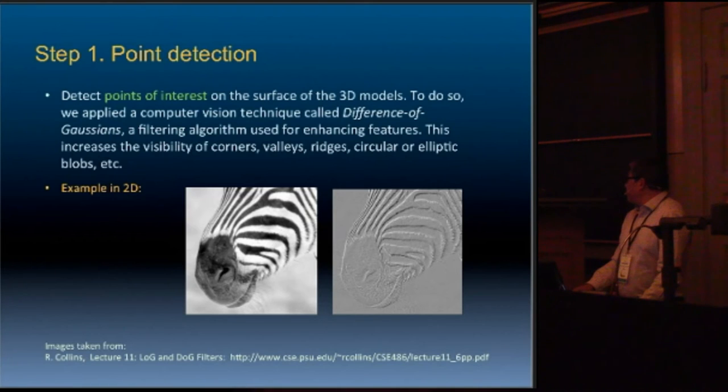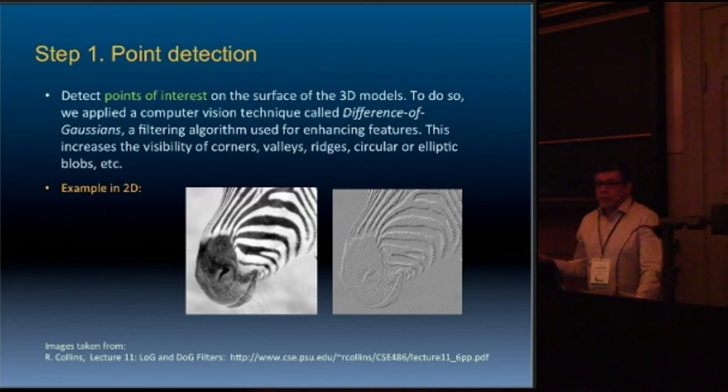The point detection phase in this work is important because in the case of text we know the word is the unit, the analysis unit, but in a 3D model we have to select points, sometimes random points. In this case, we use the Difference of Gaussian filtering algorithm, which in 2D is very common. We have it in Photoshop, for example, when we try to do this kind of thing. It's using that technique, Difference of Gaussian, but in 2D, we use it in 3D.